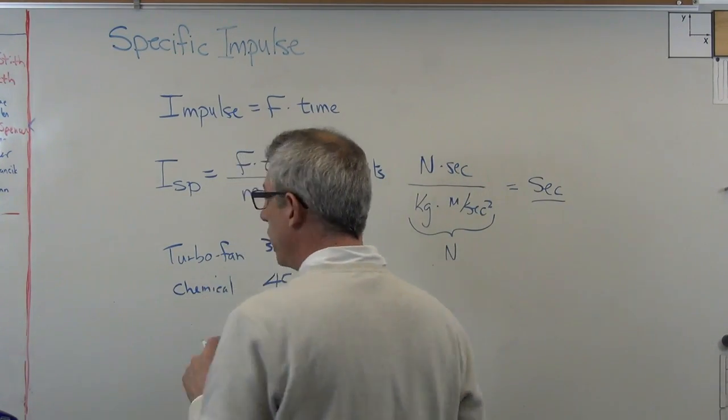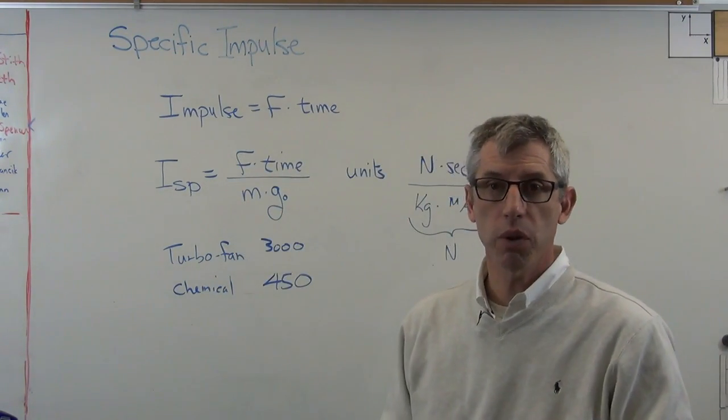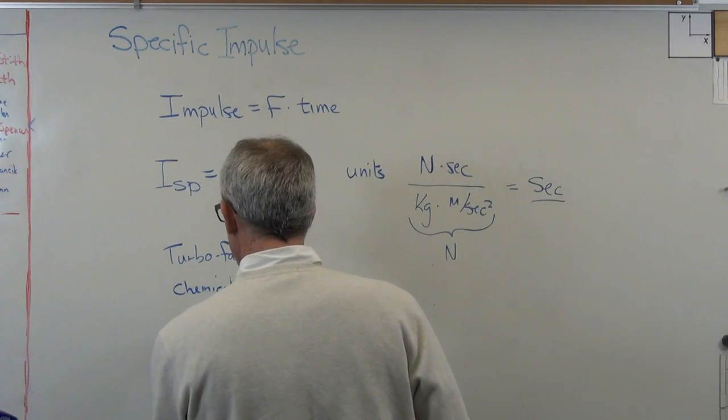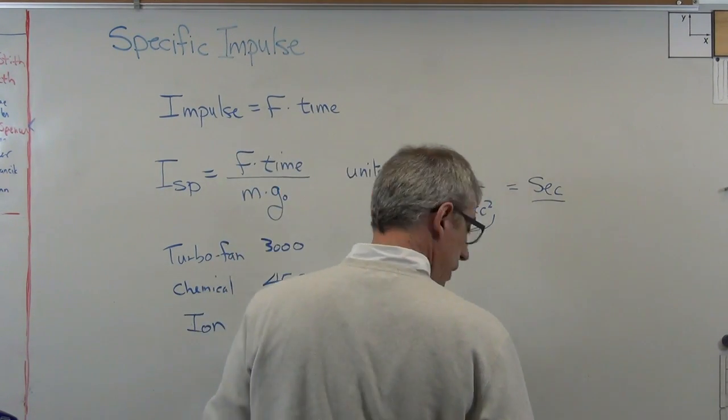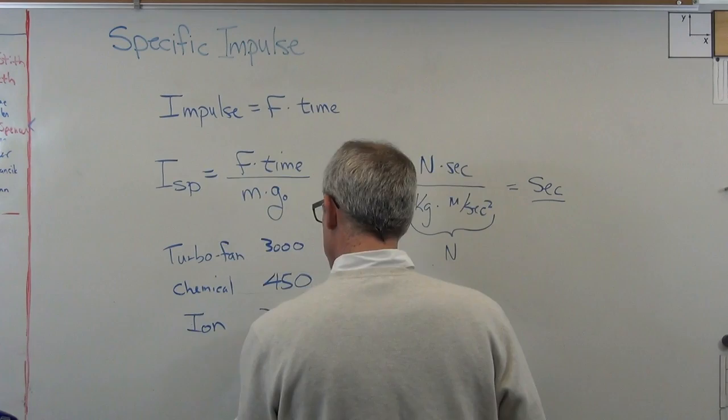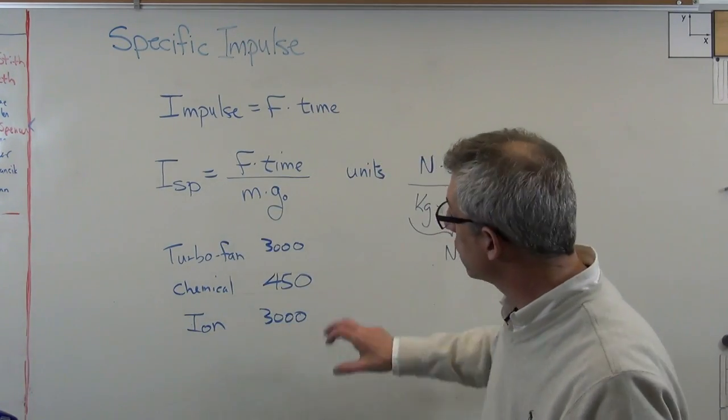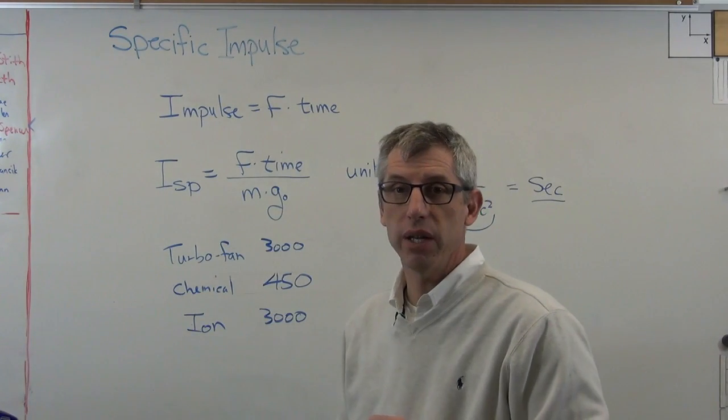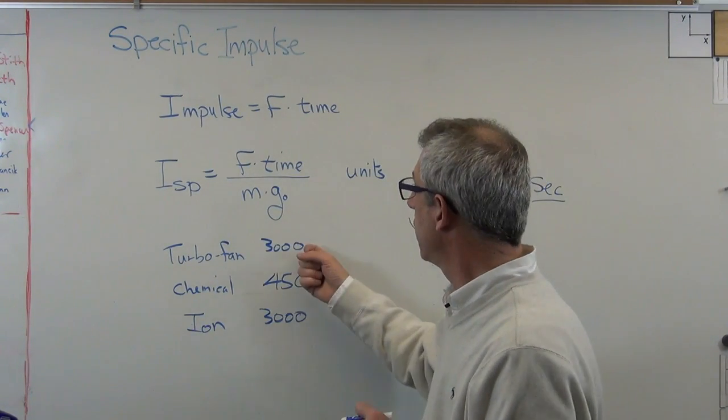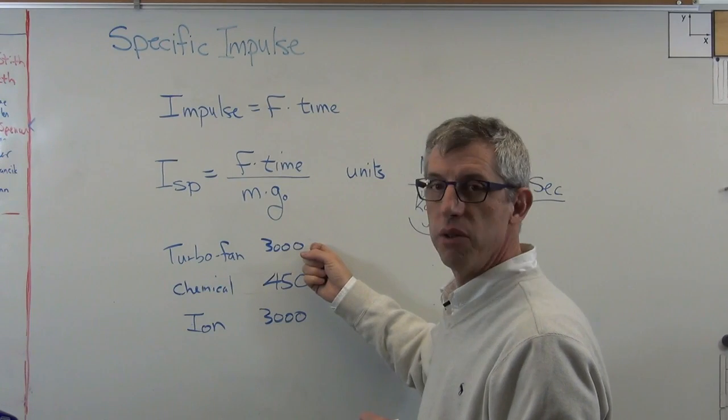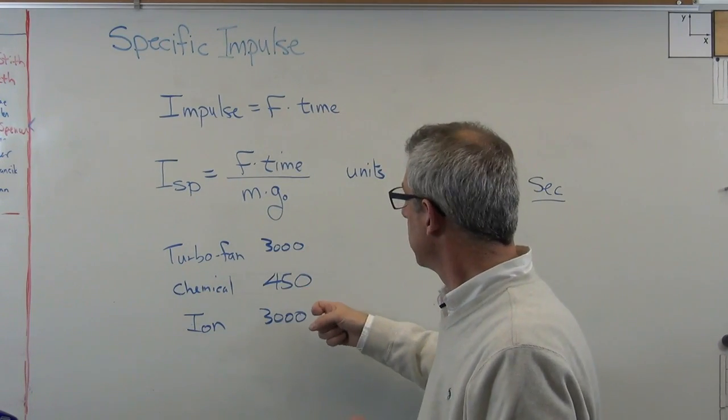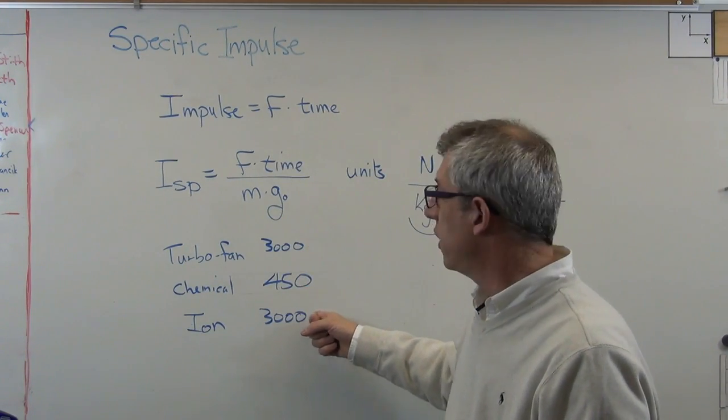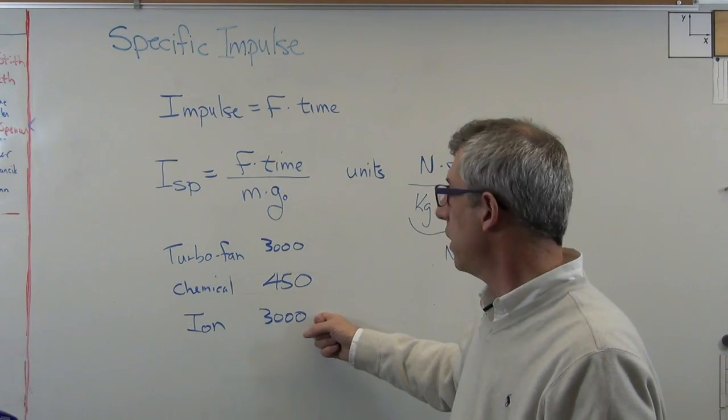So the next thing we're trying to do in powering things in space is with ion engines. And a run-of-the-mill ion engine has a specific impulse of about 3,000 seconds. So it's all of a sudden about as efficient as a turbo fan. Only problem with ion engines is that the force is measured in a couple of newtons. This thing can make hundreds of thousands of newtons of force. This one can't. So you're never going to get off the ground, at least not yet, with an ion engine.